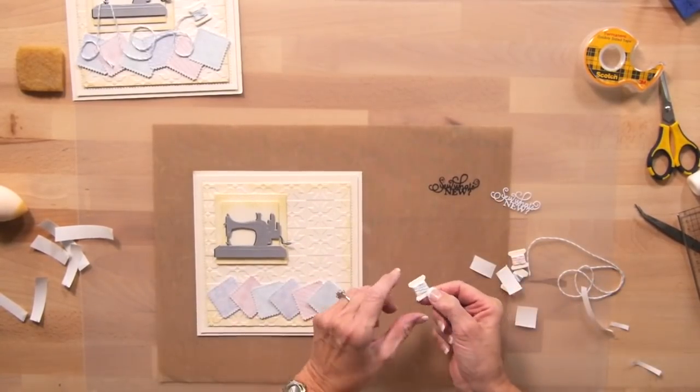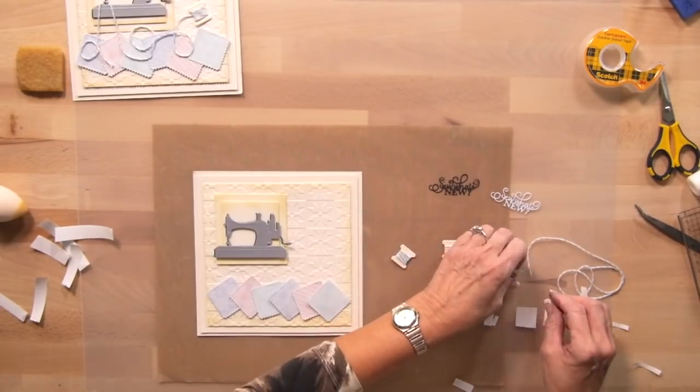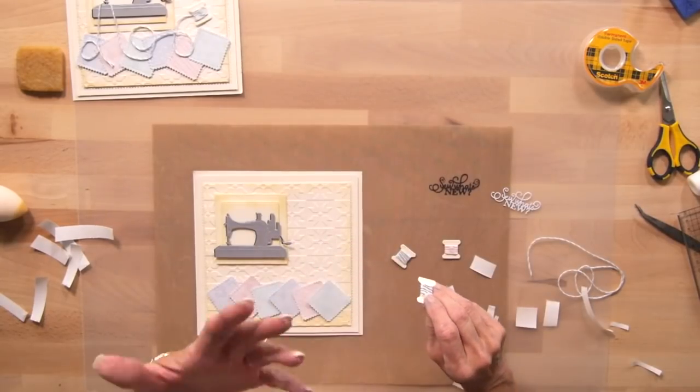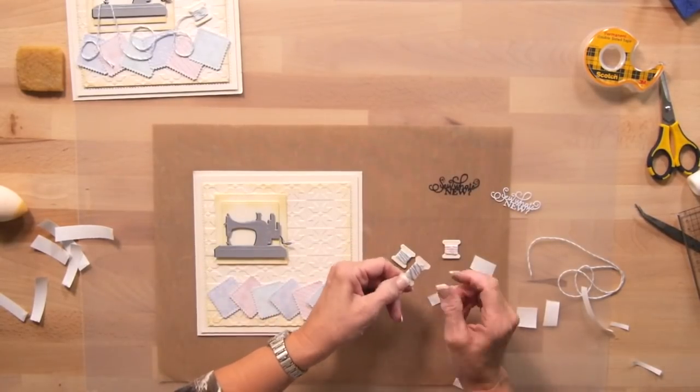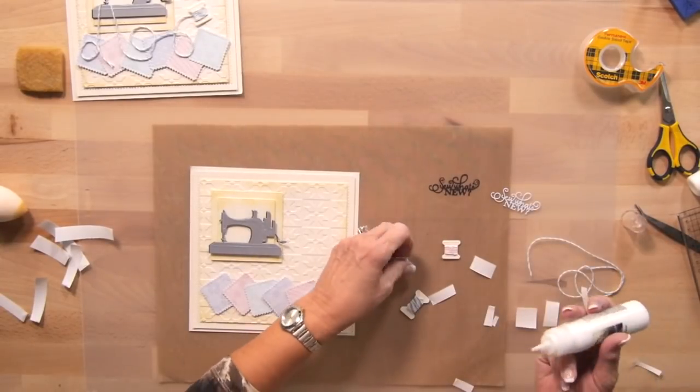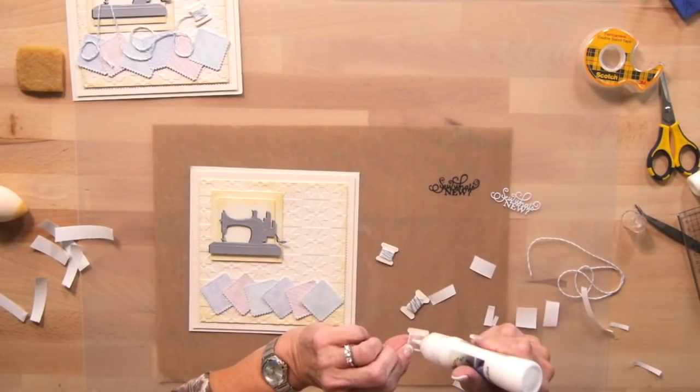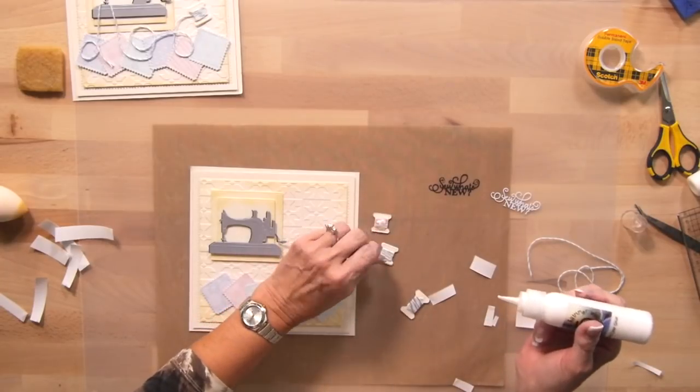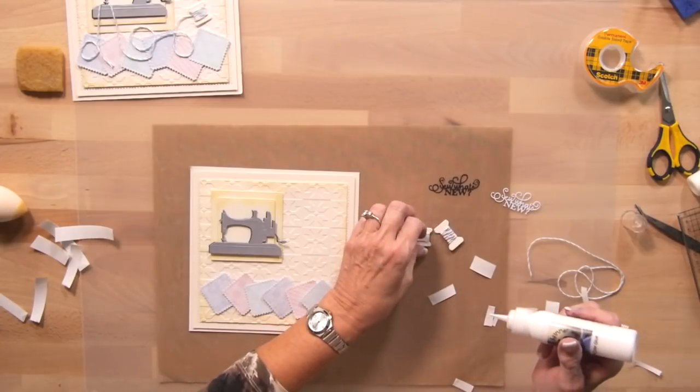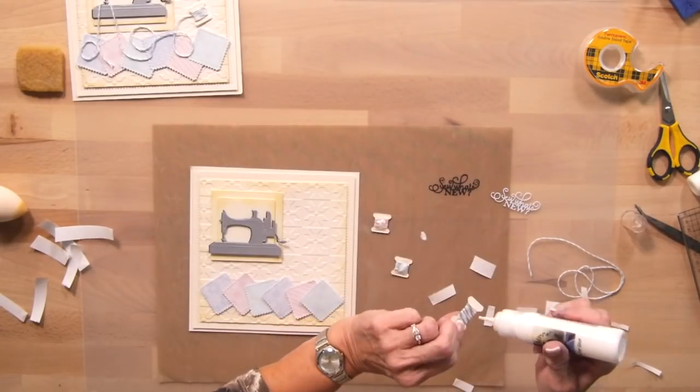So on these little spools, I've cut them out of milk card. And I've just wrapped a little bit of baker's twine around them to look like thread. And put a little bit of tape on the back. So I'm going to use some Cosmic Shimmer glue on these. And pop them on the side of the card here. Just get them set so they're nice and tacky.